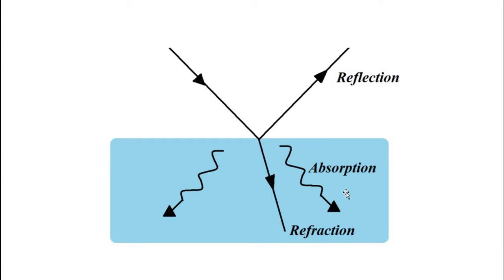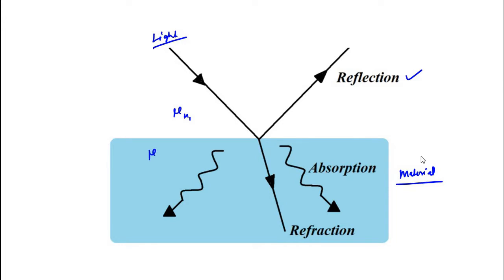No material is perfectly reflecting — even a mirror is considered a perfectly reflecting surface, but still this phenomenon happens. For a normal material, three phenomena occur when light strikes it: first a portion of light gets reflected, then a portion undergoes refraction depending on the refractive index of medium 1 and the material, and then some other portion of the light undergoes absorption — that is, loss of intensity of light.